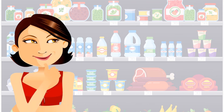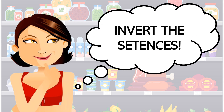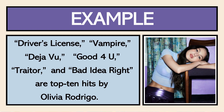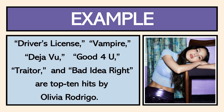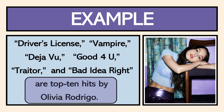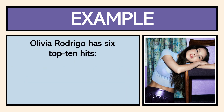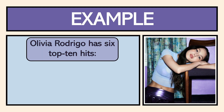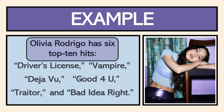So what can we do instead? We invert the sentences. Instead of having all the songs first, we bring our context to the front of the sentence and say: 'Olivia Rodrigo has six Top 10 Hits.' Now the reader has the context and the framework to hold everything, just like they would with a basket or cart. When you give them that list of songs, they know how to organize it, and that increases readability.